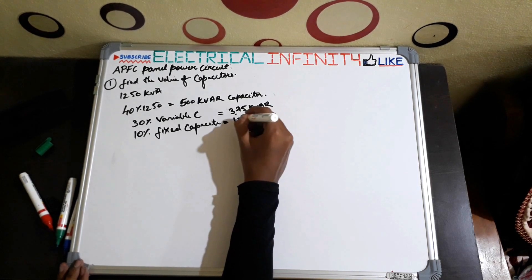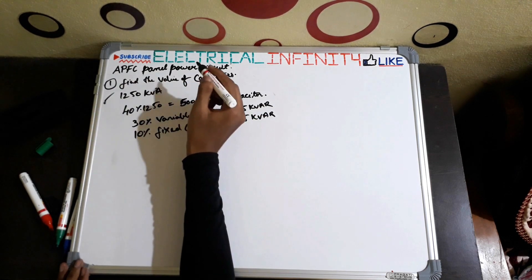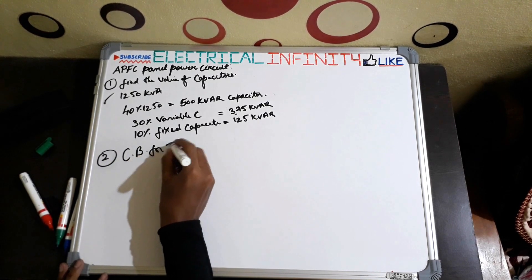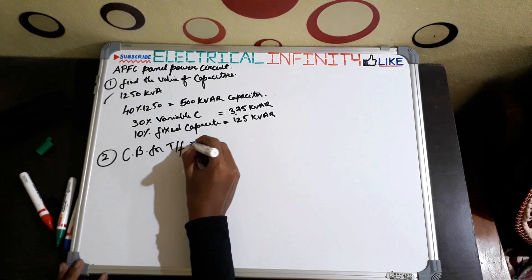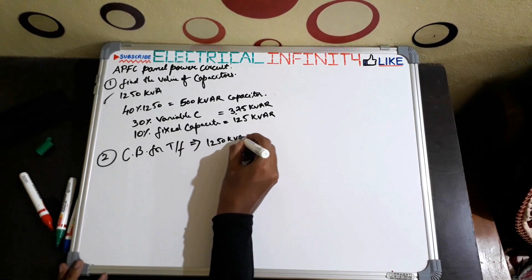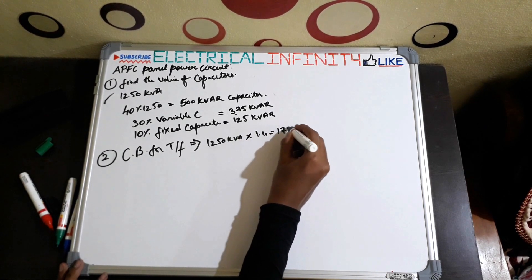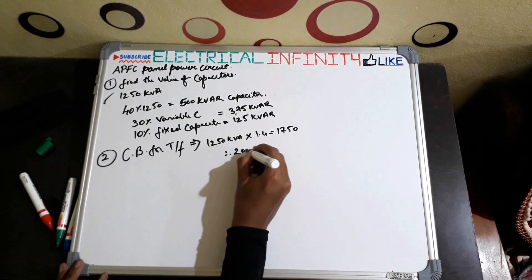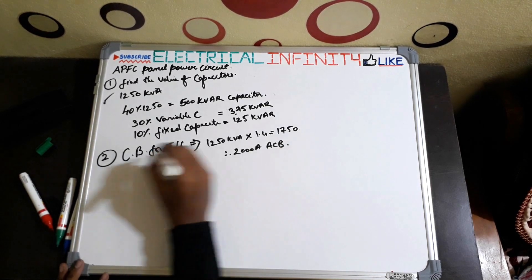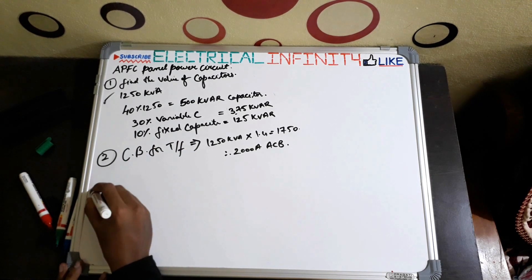Let us go to the second step: finding the value of circuit breakers for the transformer. As we are using a 1250 kVA transformer, 1250 multiplied by 1.4 equals 1750 kVA, so therefore we are using a 2000 ampere ACB. Hence the second step is completed.